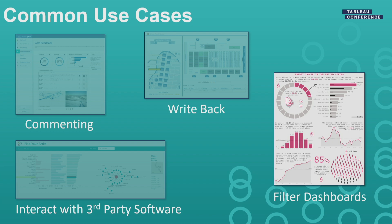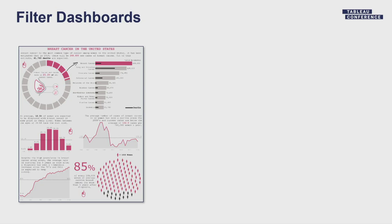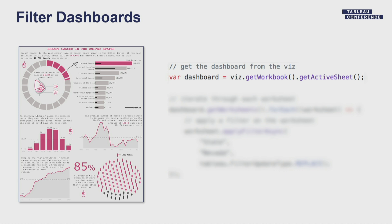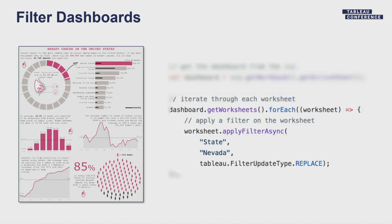First, we're going to look at dashboard filters. What Timo showed you was the way to filter a single worksheet, but the JavaScript API actually allows you to do more — you can filter all the worksheets in a dashboard. So let's say you have a nice dashboard and you want to apply a filter to each worksheet. You would grab the dashboard from your viz object, get all the worksheets from the dashboard, iterate through each one and apply a filter — here I'm applying state equals Nevada. But if you want to, you can apply separate values for each different worksheet.